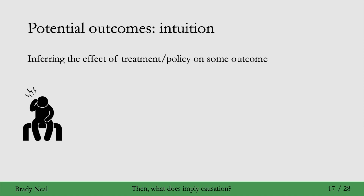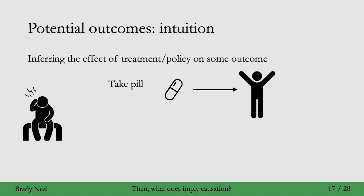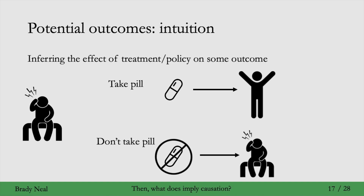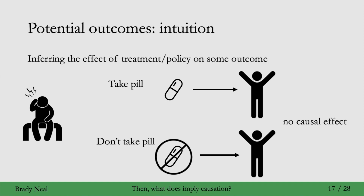The context is that we're inferring the effect of some treatment on some outcome. Say in this example you have a headache, and you know that if you were to take a pill, your headache would go away, and if you were to not take a pill, you would still have your headache. If you know these two things, you can say there is a causal effect of the pill on your headache. But what if, when you were to not take the pill, your headache still goes away? Then your headache goes away regardless of whether you take the pill, and you might say the pill does not have any causal effect — maybe it's just a sugar pill.